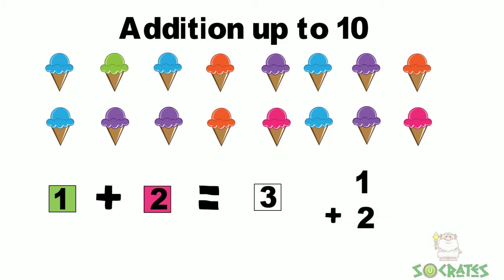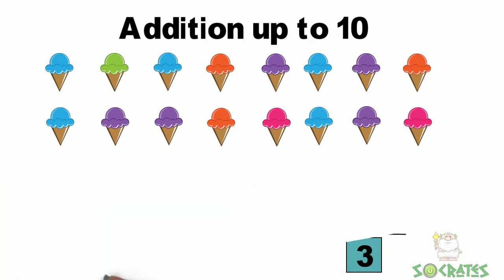put the one above a two with a plus symbol and a line and then the answer goes below for three. One plus two equals three. Let's try another.